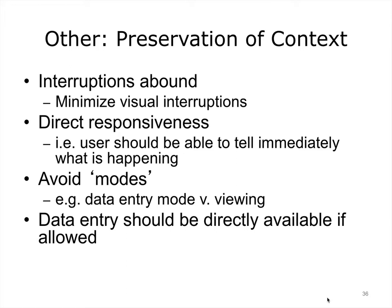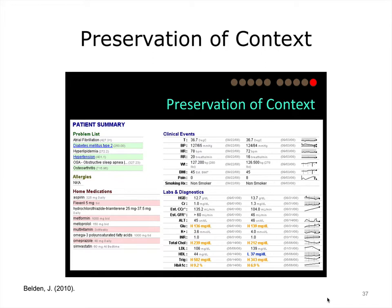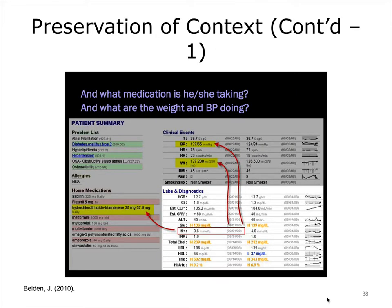Preserving context is important in healthcare where interruptions are frequent. Context is also important in preventing errors since the significance of information depends on context. Systems should provide direct responsiveness so that users can tell what is happening at any point — visibility of system status and whether their task is progressing normally. Some older systems have the user set modes for data entry versus viewing; this is to be avoided as it can lead to errors and user frustration. This is an example of a dashboard screen — including all elements on the same page provides context for understanding how aspects of the patient's condition relate to one another.